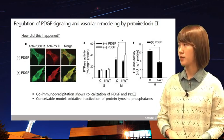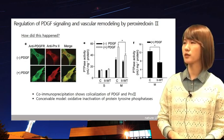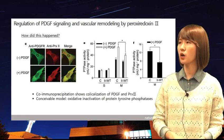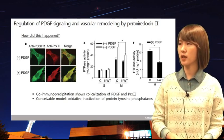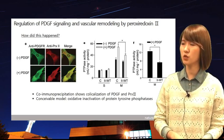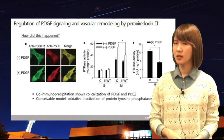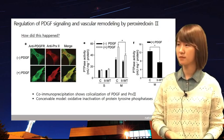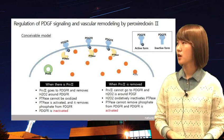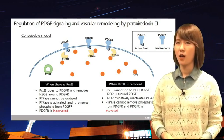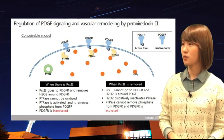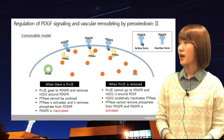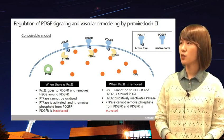The next question is: how did this happen — by PRX2 itself or by hydrogen peroxide? Co-immunoprecipitation results show that PRX2 and PDGFR are co-localized in the cell. Thus, it means hydrogen peroxide near the PDGFR was removed by PRX2, and it impaired PDGFR. They made a model for this: oxidative inactivation of protein tyrosine phosphatases. When PRX2 is present, it goes to PDGFR and removes surrounding H2O2. PTPA is in its active form and removes phosphate from PDGFR, so PDGFR is inactivated.